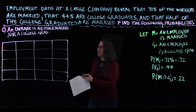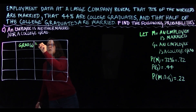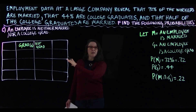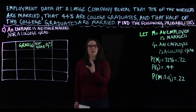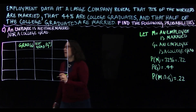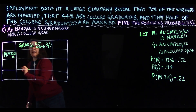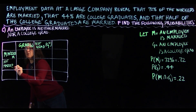Setting up the contingency table: we have two conditions. One dimension is college grad (G) and not a college grad (G^c, the complement). The other dimension is married (M) — which we labeled M earlier — and not married, the complement of being married, M^c.